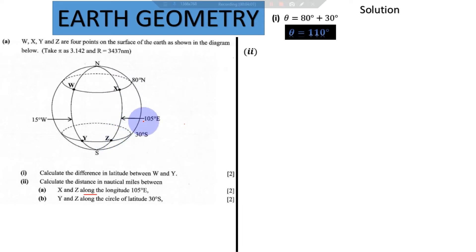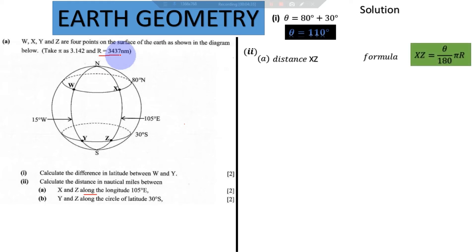We need to introduce the formula for calculating distance along the longitude. Longitudes are great circles, meaning they cut the Earth into two equal halves, so their radius is the same as that of the Earth. The simplified formula for calculating distance along the longitudes is: XZ = (θ / 180) × π × R.